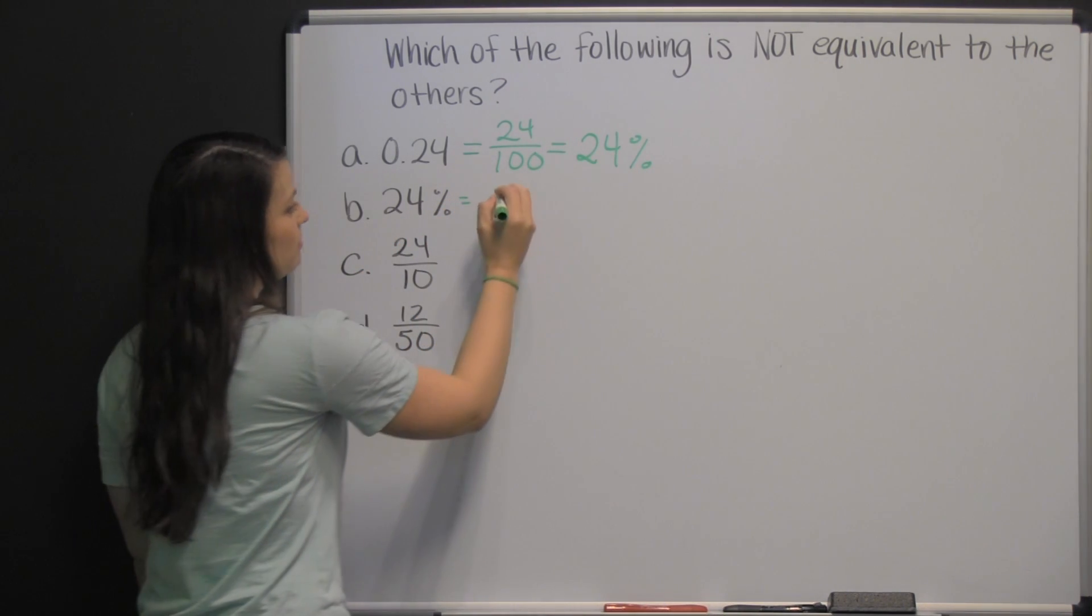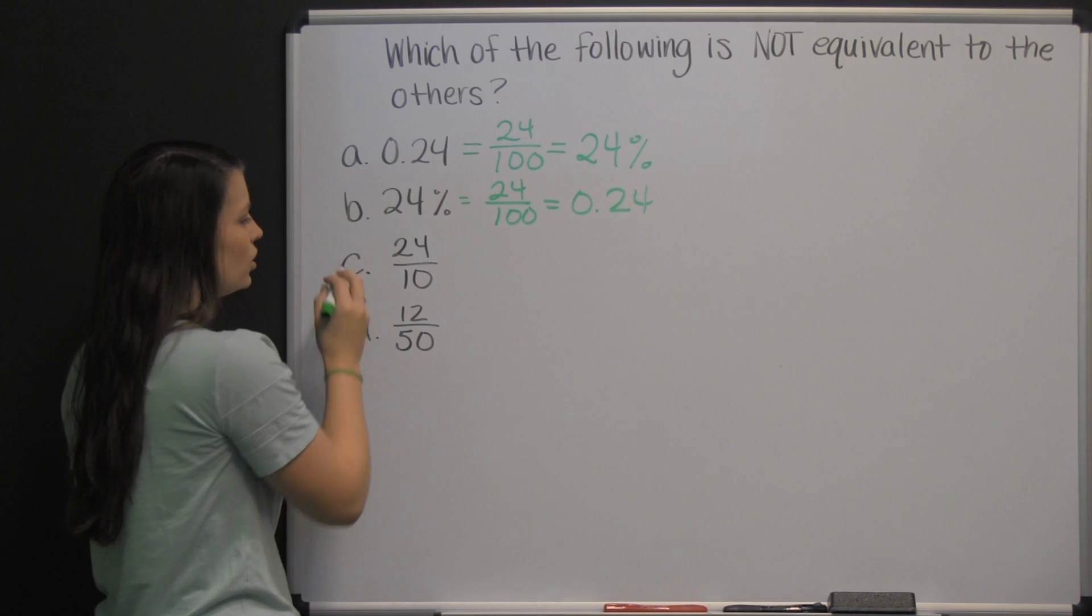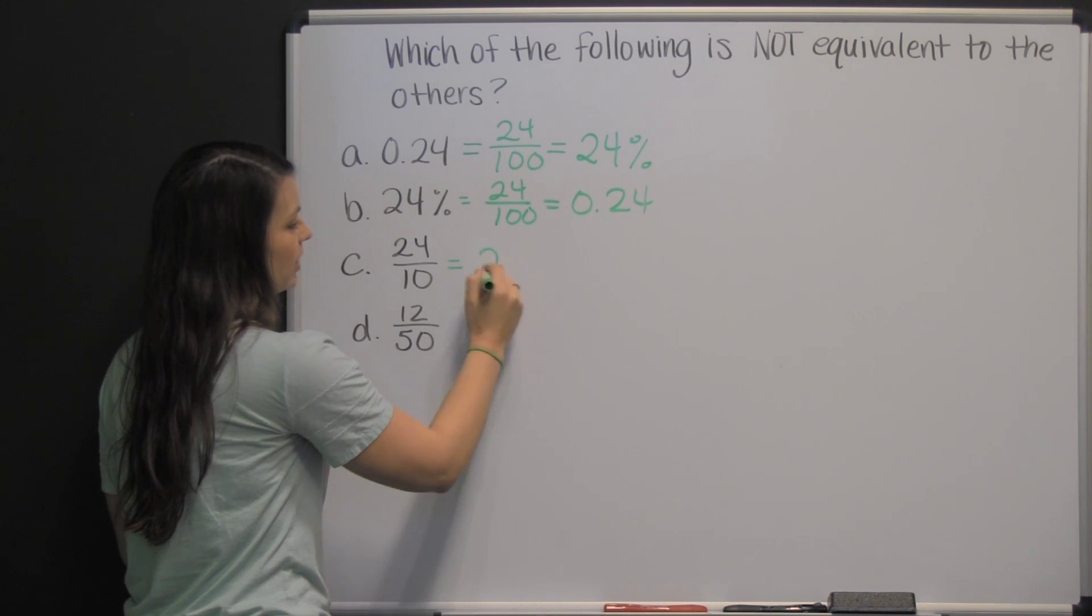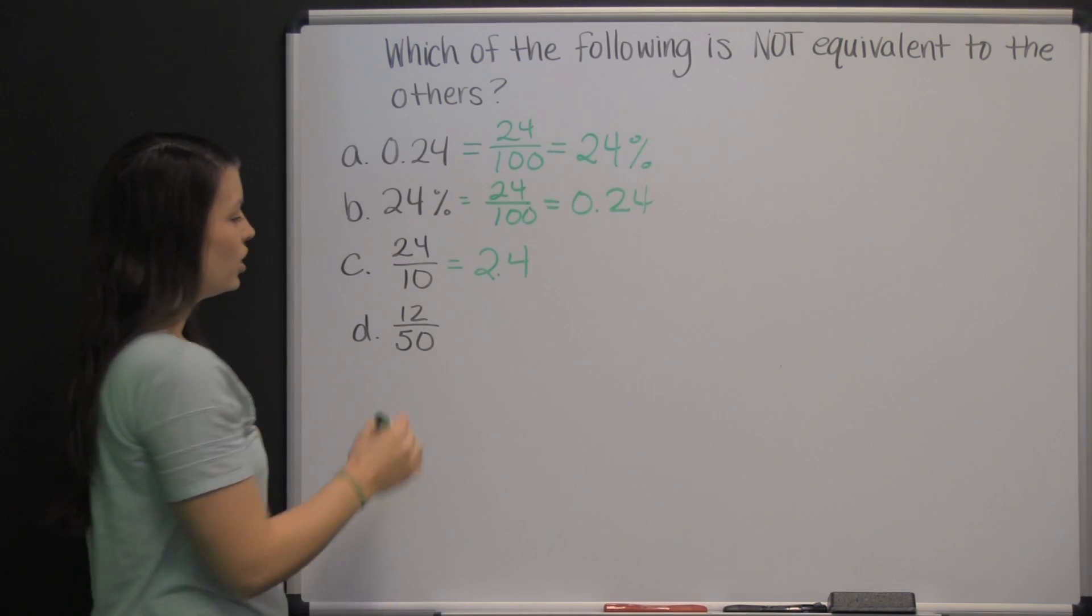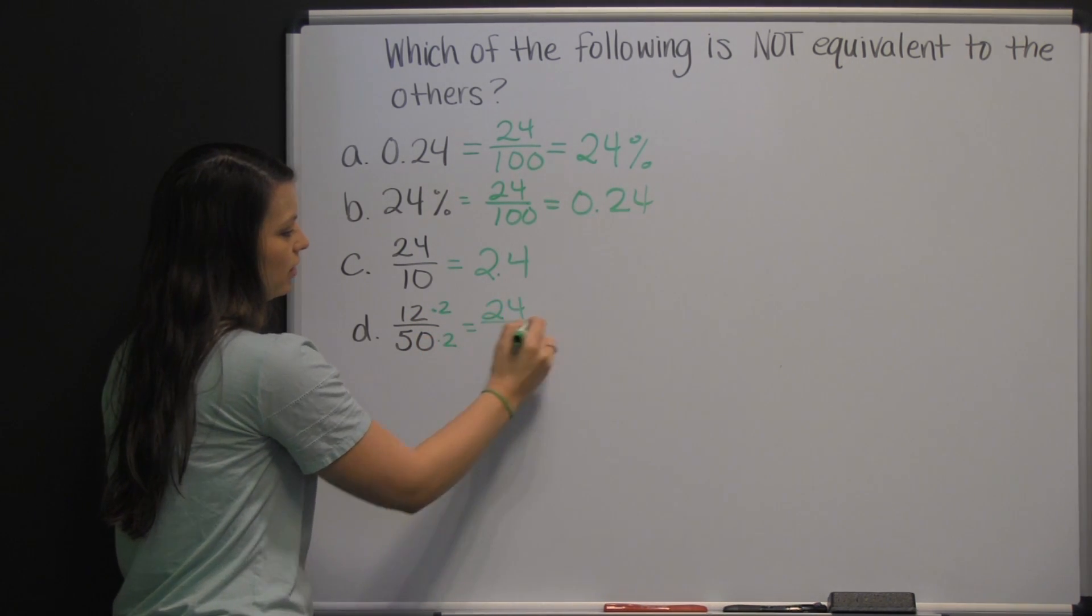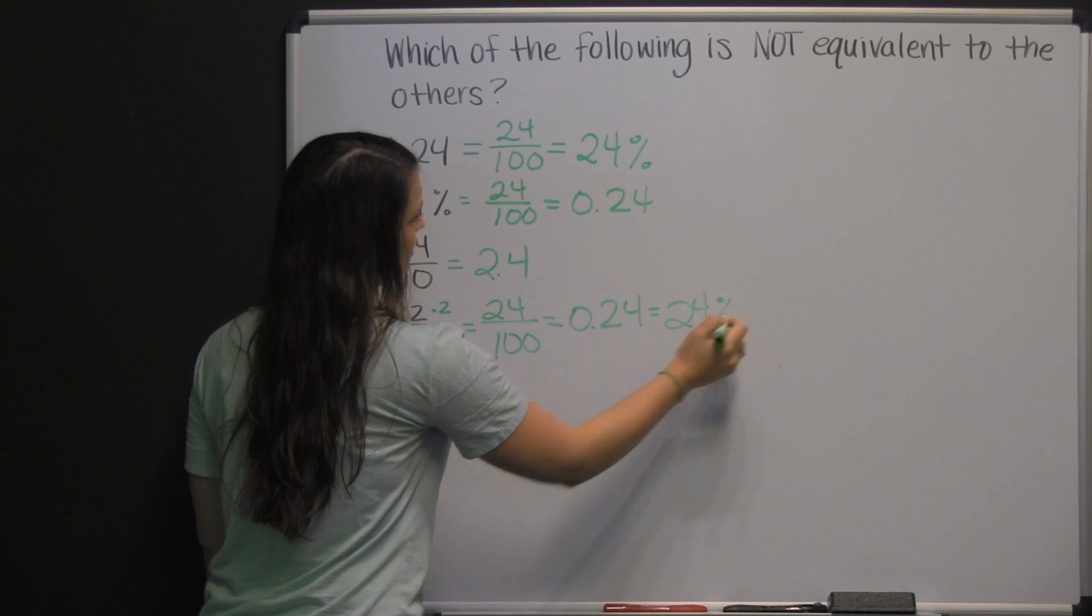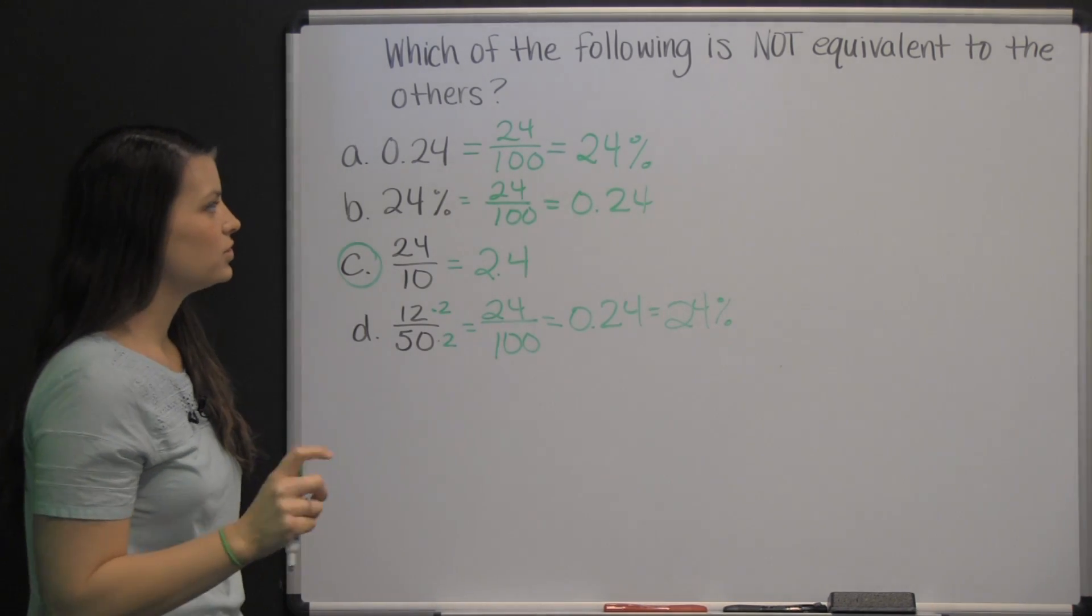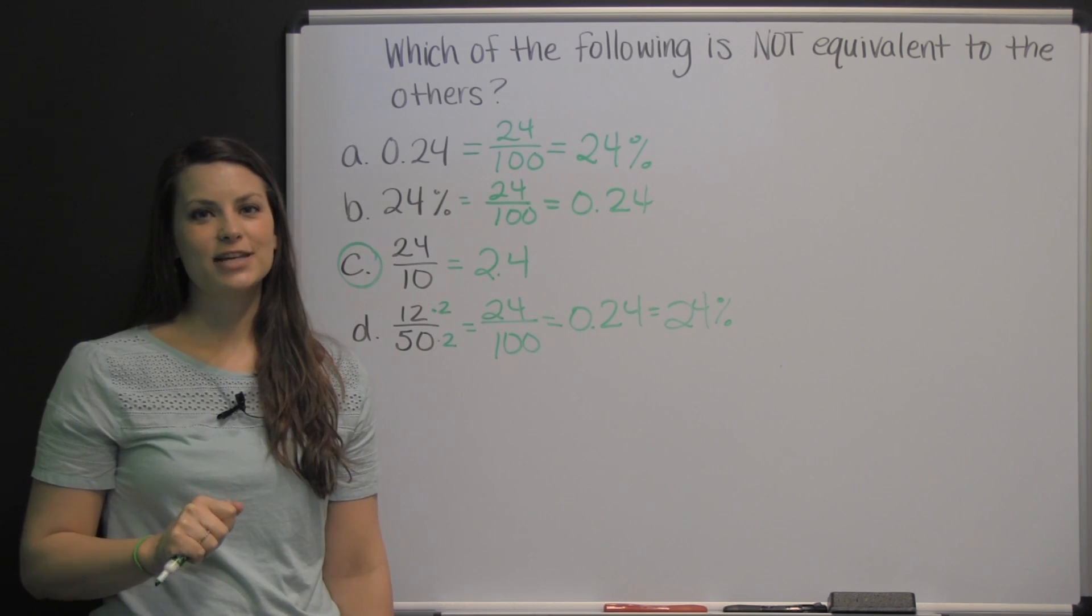24 percent then, likewise, can be written as 24 per 100 and 24 hundredths. 24 tenths is not the same as 24 hundredths. 24 tenths can also be written as 2 and 4 tenths, which is not like 24 hundredths. 12 fiftieths though, we can take and multiply numerator and denominator both by 2 and get 24 hundredths. So C is the answer. It's the one that's not equivalent to all the others. So there you have an example of the type of question you'll encounter when you take the HSPT. Good luck!